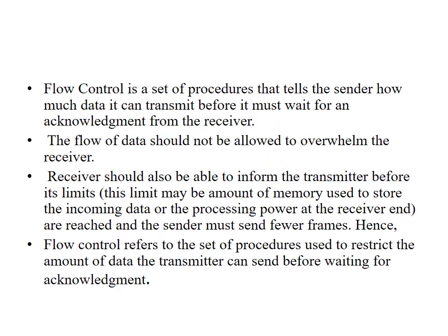Flow control refers to a set of procedures that tells the sender how much data it can transmit before it must wait for an acknowledgement from the receiver. The sender should identify the receiver's processing speed. For example, if the receiver is able to process 100 packets per second, the sender should send only 100 packets per second.